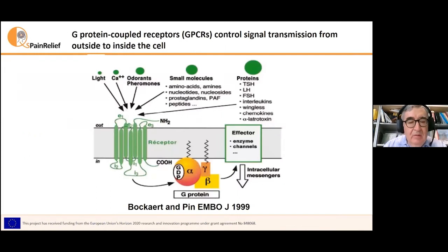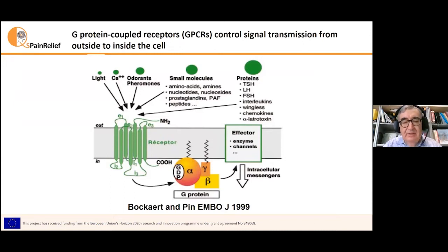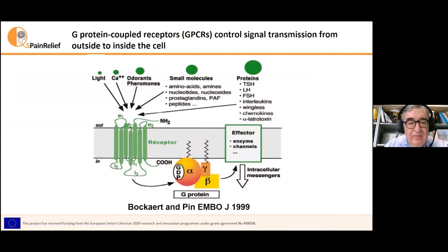G-protein coupled receptors, or GPCRs, are membrane proteins that transmit the signal embodied in the molecular structure of neurotransmitters, hormones, synthetic ligands, or even photons of light from outside to inside the cell through the interaction of the receptor with a G-protein.